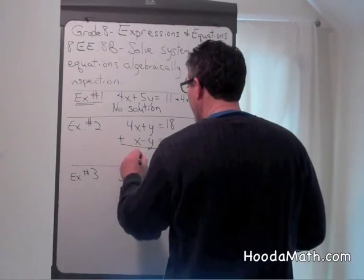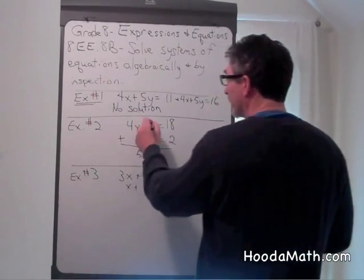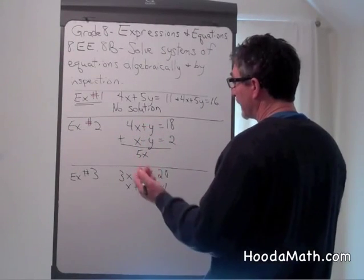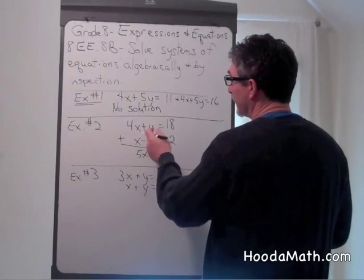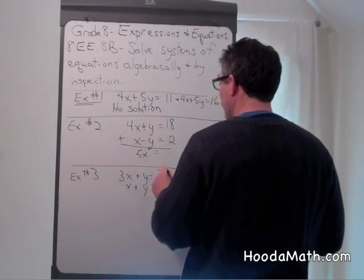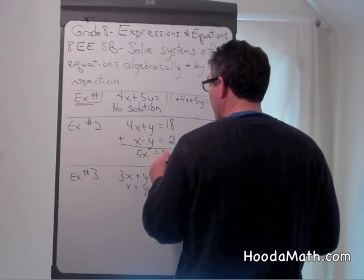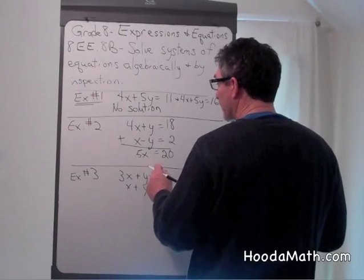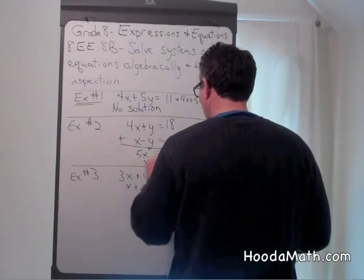4x plus x equals 5x. We've eliminated the y's when we add positive y and negative y, or positive 1y and negative 1y. We add their sums together and we get 5x equals 20. If we divide both sides by 5, x equals 4.